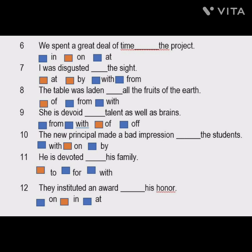Moving to the eighth sentence: 'The table was laden ___ all the fruits of the earth.' We have three options — of, from, and with. The correct answer is 'with': the table was laden with all the fruits of the earth. Make sure you also try the other prepositions from the options to see what difference it makes.